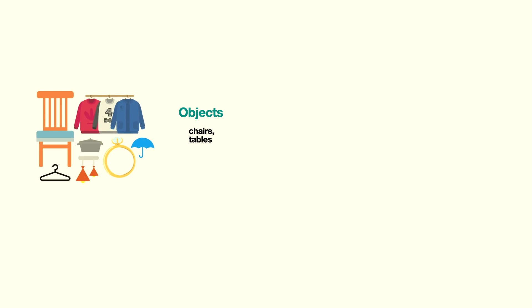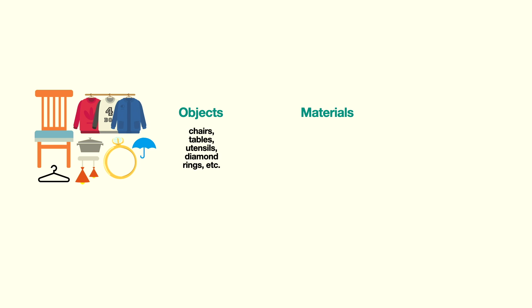So whatever we see around ourselves, whatever things are tangible, they are all objects. They are everywhere we look around — so many of them. From chairs, furniture, clothes, cars, aeroplanes, diamond rings — the list goes on and on. But all these things are finally made from certain materials.